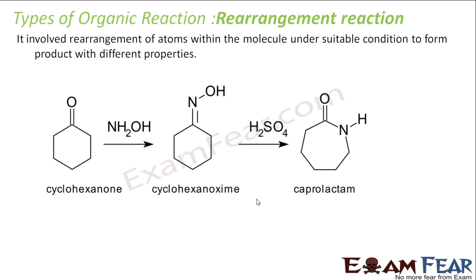The next type of reaction is called rearrangement reaction. Here the rearrangement of atoms within the molecule takes place under suitable conditions to form product with different properties. For example, cyclohexanone with NH2OH becomes cyclohexanoxime, and this when you pass with H2SO4 becomes caprolactam. If you see, the rearrangement happens. This is a ketone, this is amine. The group also changes. This is called a rearrangement reaction.